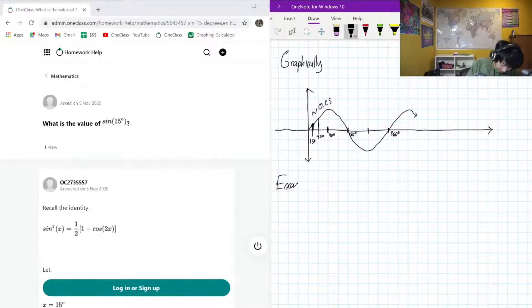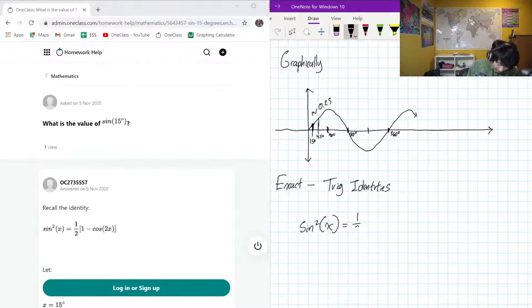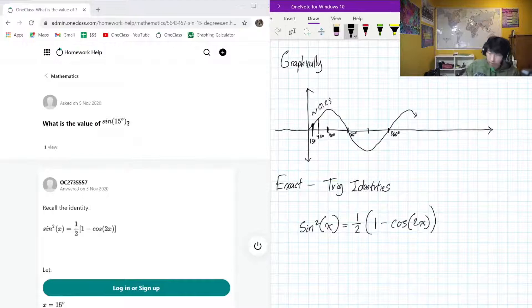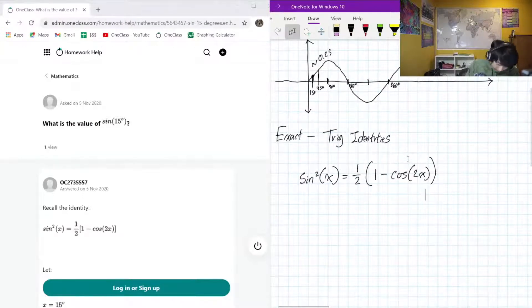But to get the exact version, you definitely do not want to do it graphically. To get the exact version, you'll want to go through a process of trigonometric equalities, or identities. Okay, so the main one that we want to use here is that we know that sine squared of x is equal to 1 half 1 minus cos squared of x.